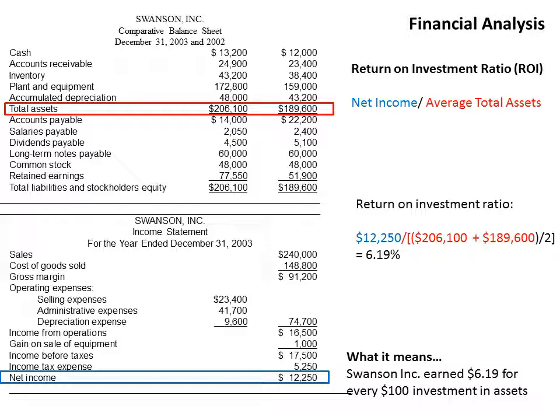What does 6.19 mean? Swanson Inc. earned $6.19 for every $100 invested in assets. When they invest in assets such as a plant, equipment, or a building, this ratio tells you how much that investment is translating into sales. That's a very solid return on investment, showing they're spending their money wisely when investing in the business. Higher is better, and compare to industry.